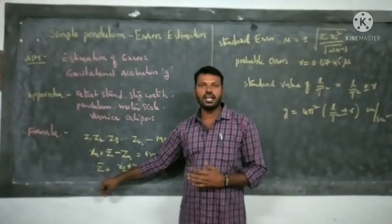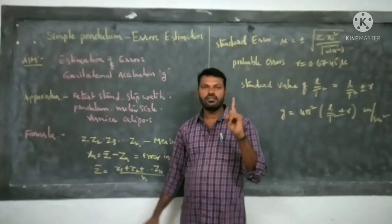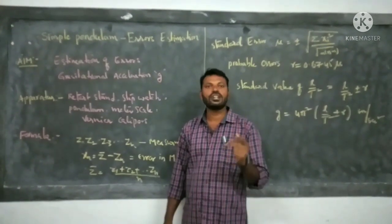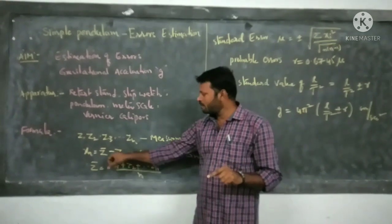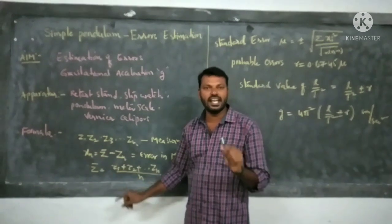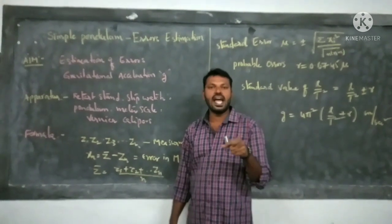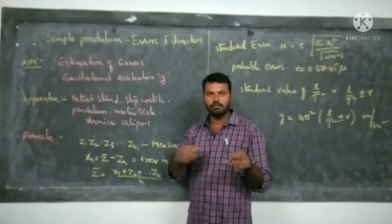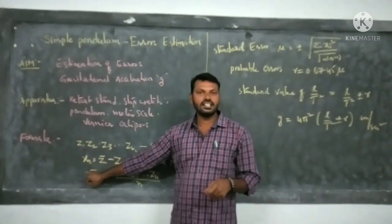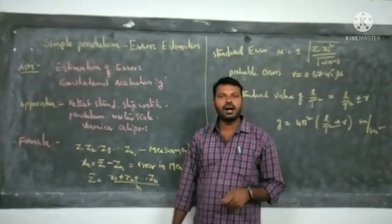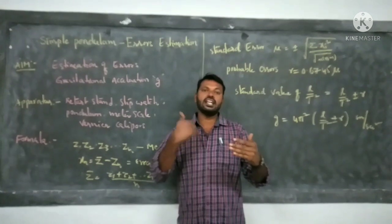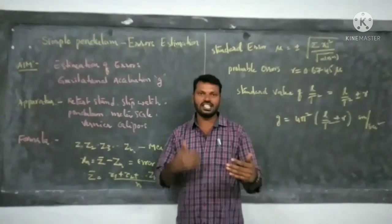First take the measurements, next calculate the average value Z bar, then subtract each reading from the average value — that means Z bar minus Zn. The error is given by Xn equals Z bar minus Zn. For any set of readings, the errors are X1, X2, X3, and so on.